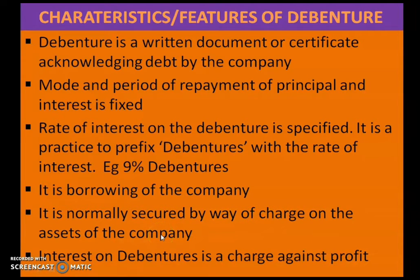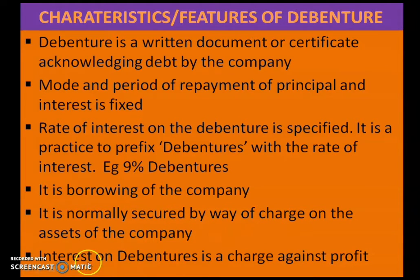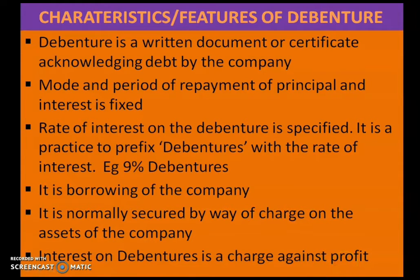Debentures are normally secured by way of a charge on the assets of the company — the assets of the company are put under charge as security. Interest on debentures is a charge against profit, meaning the company must pay interest on debentures from its profits.